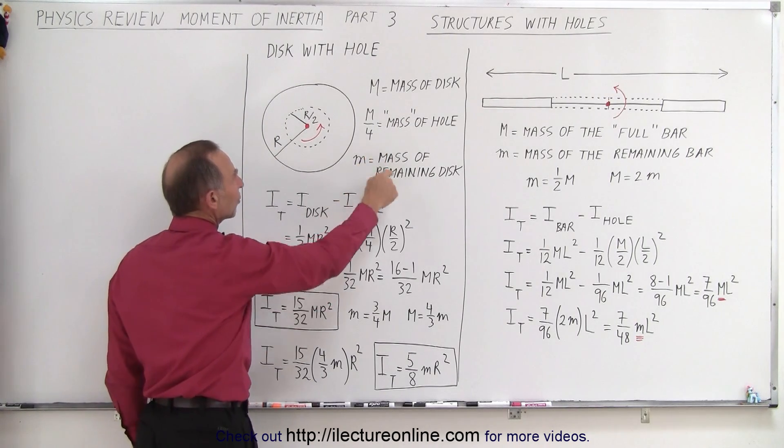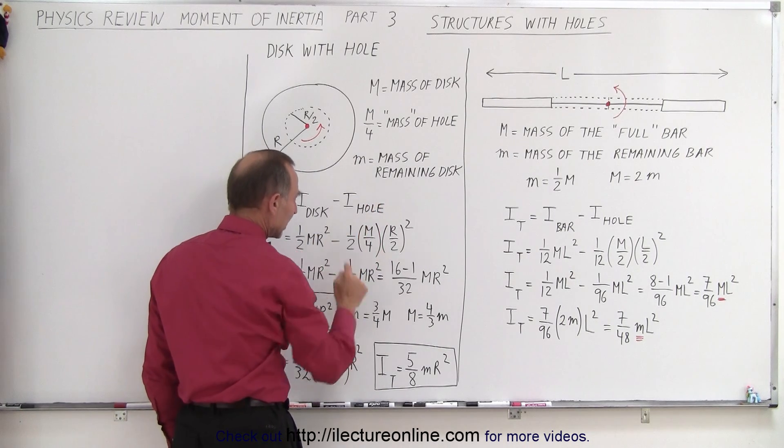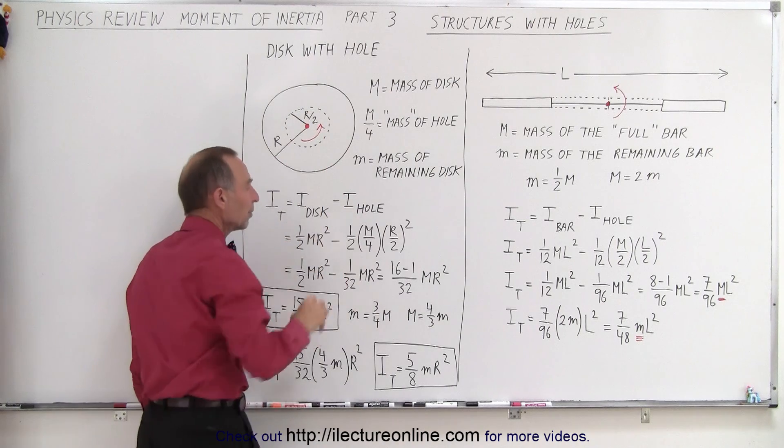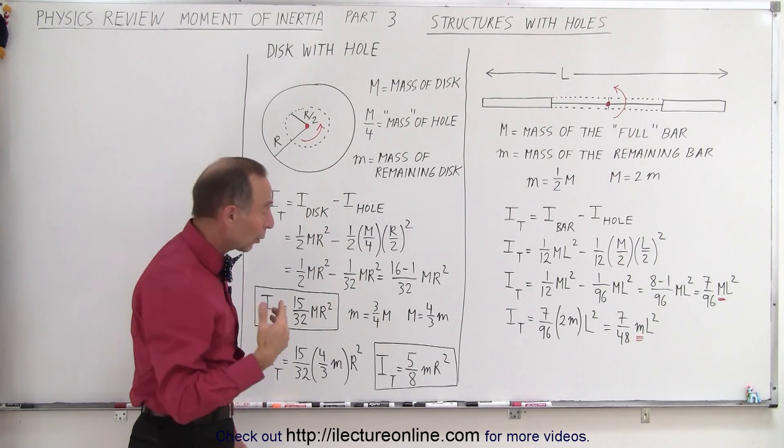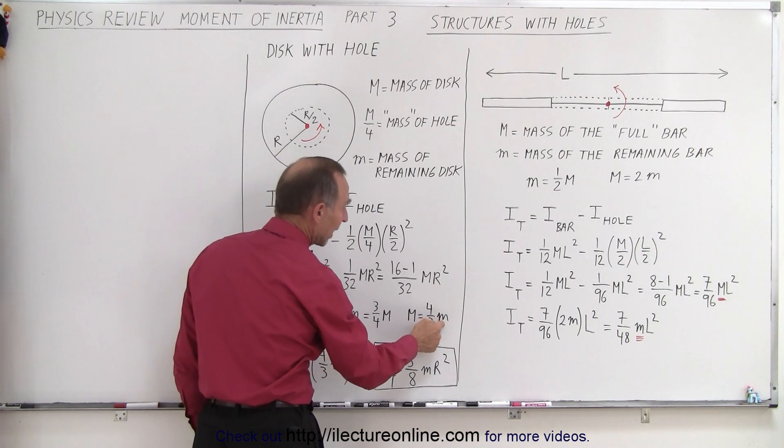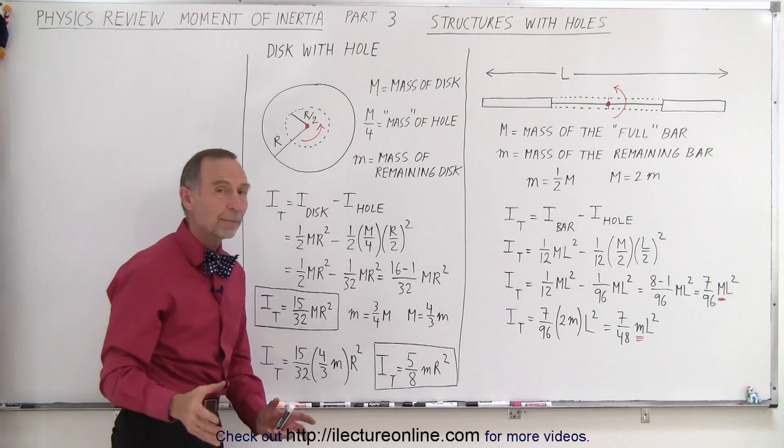Little m would then be the mass of the remaining disk. Notice that the mass of the remaining disk will be three-quarters the mass of the whole disk, because one-quarter is missing. Or, if we equate the mass of the whole disk minus the mass of the hole, or in relation to the mass of the remaining disk, M would then be 4/3 the mass that's remaining.